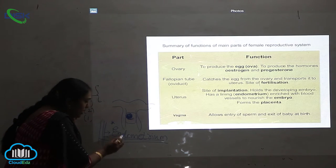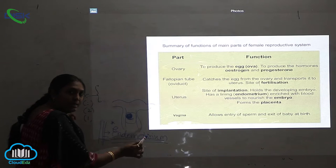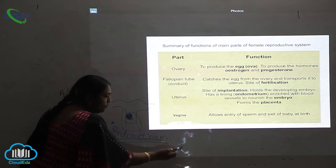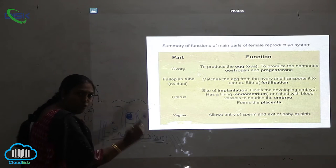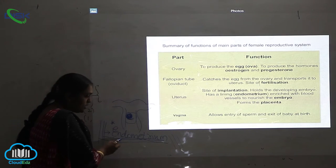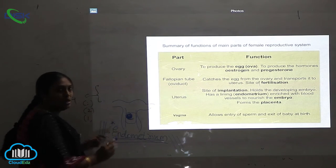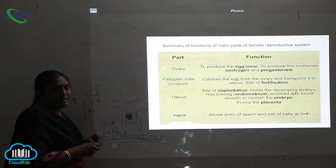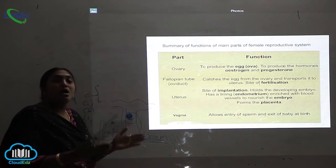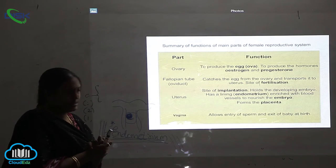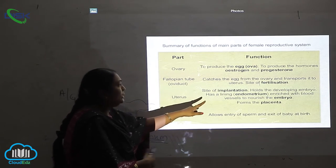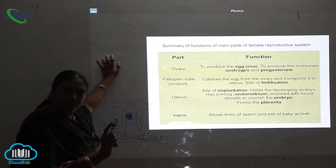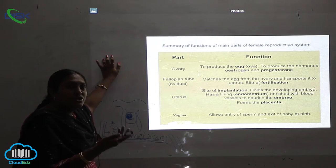If fertilization does not occur, the endometrium is highly enriched with blood vessels, and this lining is shed off through the vagina in the form of blood — this is the menstrual cycle. Such an important role is played by the endometrium, which is the wall of the uterus. If fertilization does occur, it also forms the placenta.